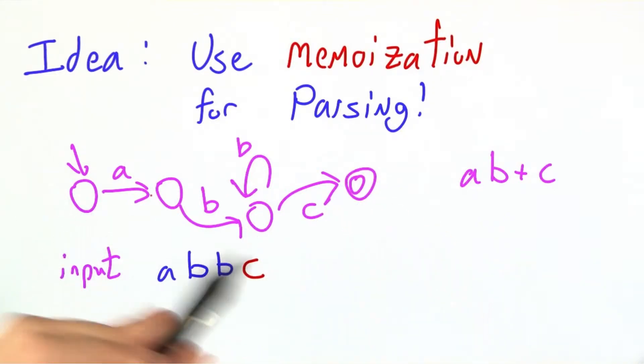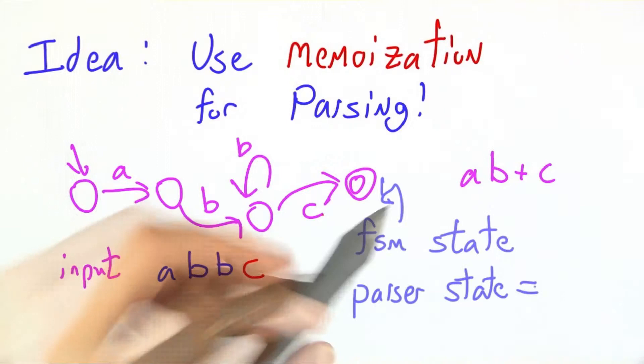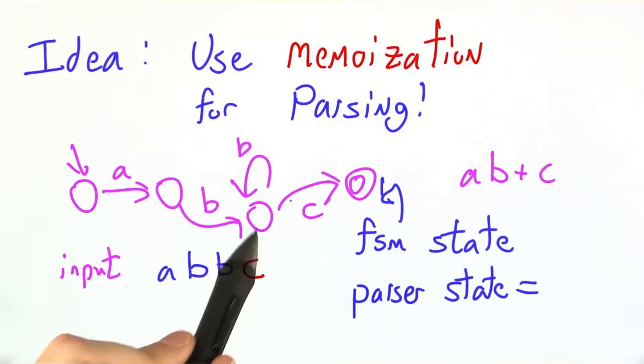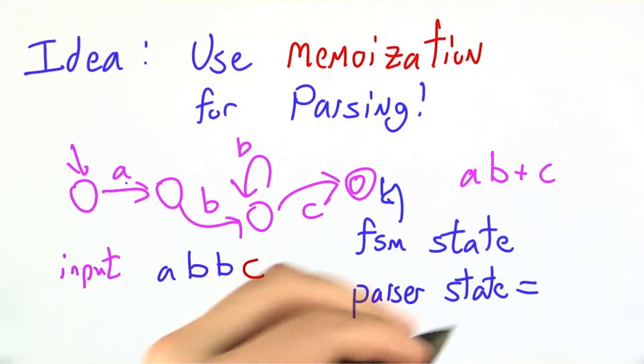We're going to use this same put your finger on it trick for parsing, to keep track of where we are, to keep track of which state we're in. Now for a finite state machine state, that was pretty easy. They were the circles. For a parser state, this is not so clear.